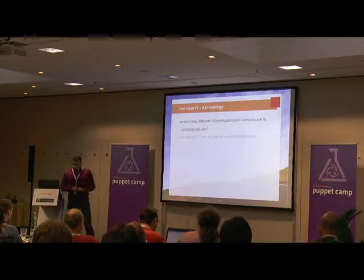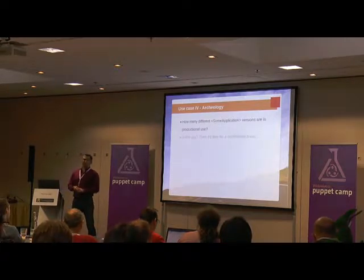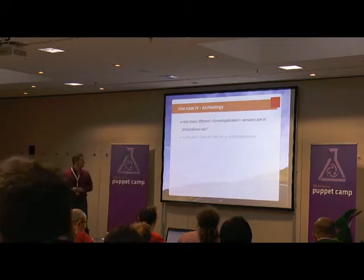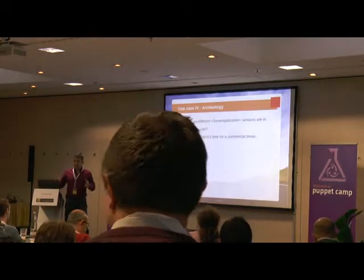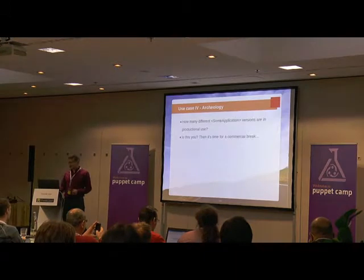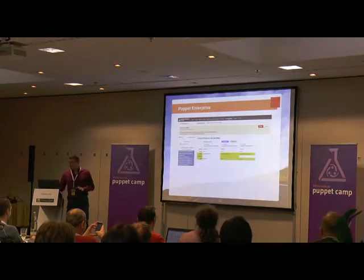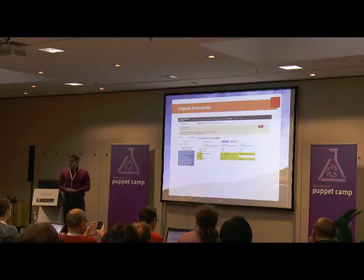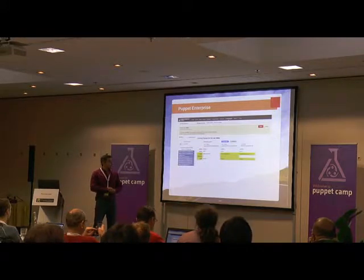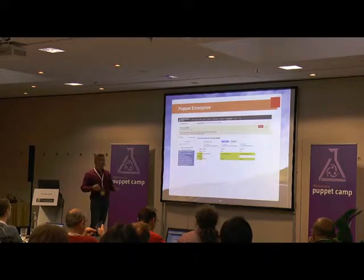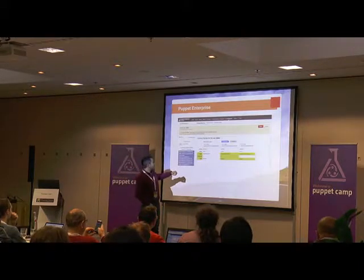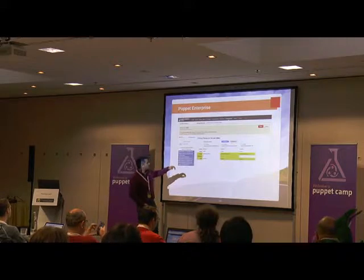Archaeology. You could use mCollective to find out what's going on — how many different Tomcat versions are floating around, how many Apache versions you're using, whatever. If you have an environment where you don't know what's really running or what versions of software are in production, then it's time for a short commercial break: Puppet Enterprise. This is one part of the Enterprise console that's great. I haven't seen anything in free frontends that's able to do something like this. I examined a specific user.